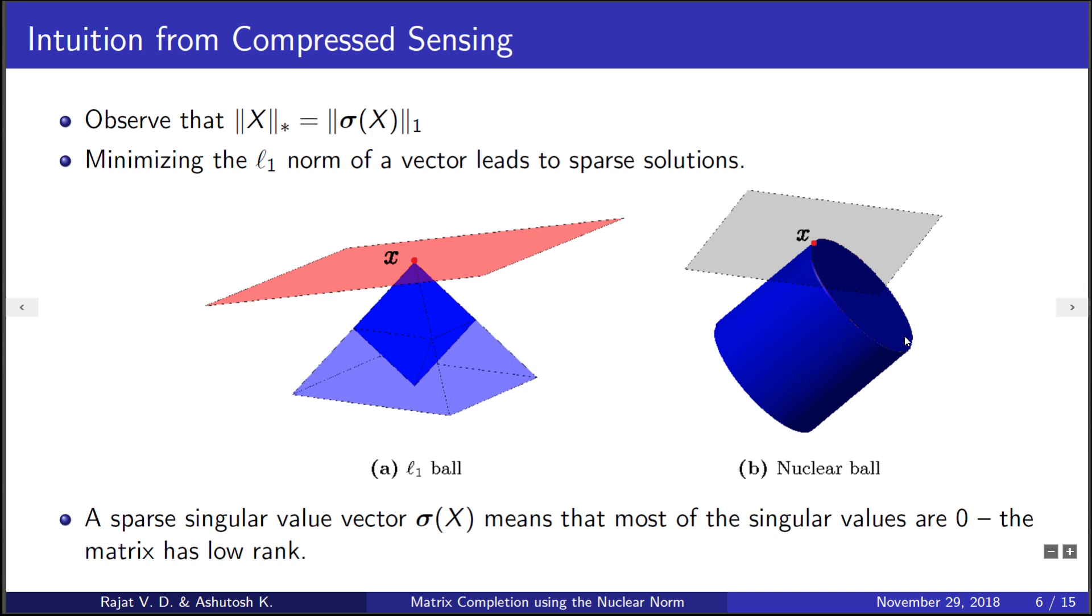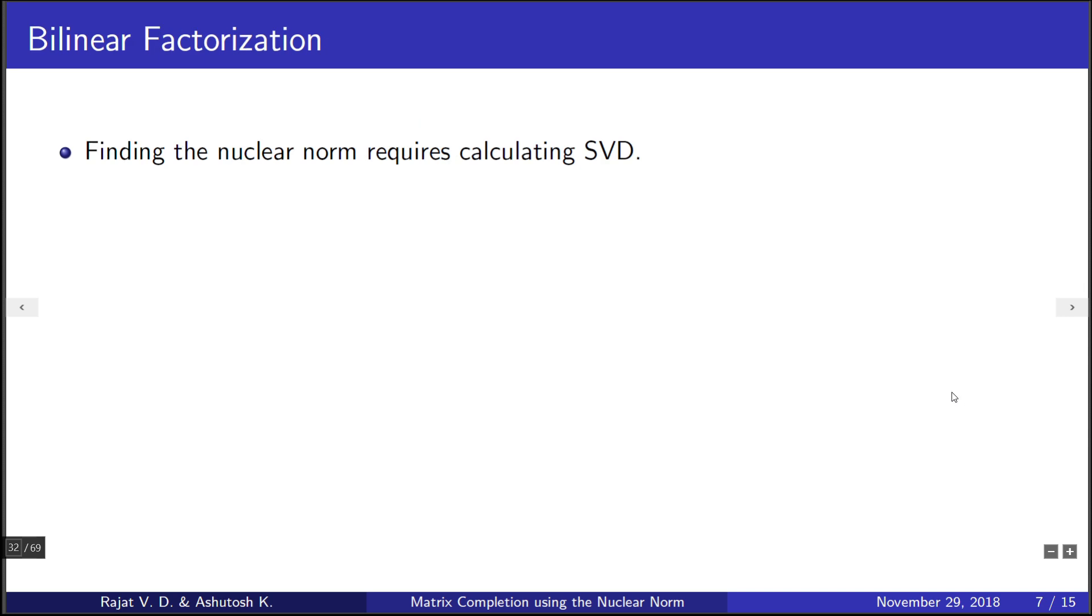Finding out the nuclear norm requires us to find the SVD, which is inherently a slow operation. The minimization of nuclear norm involves iterative algorithms with SVD at each step, which consequently slows down the process even more. To tackle this problem, we introduce the concept of bilinear factorization.